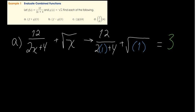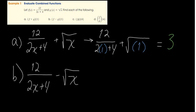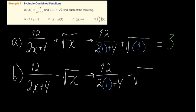For b, it's f minus g of 1. We rewrite the same thing but with a subtraction sign: 12 over 2 times 1 plus 4, minus the square root of 1. That's 12 over 6 is 2, minus 1 equals 1.